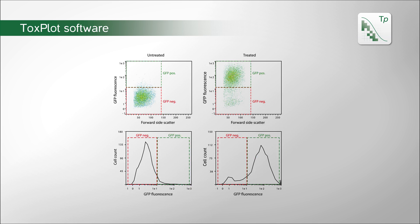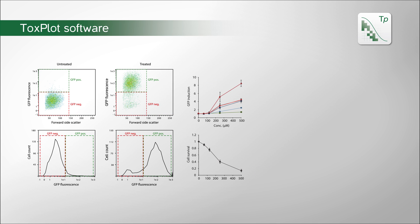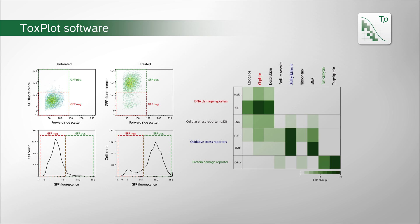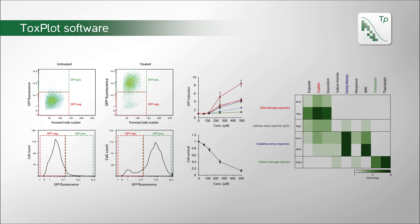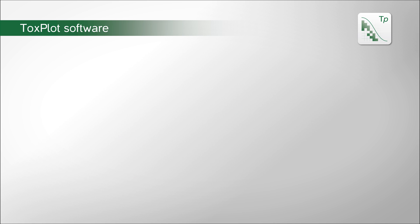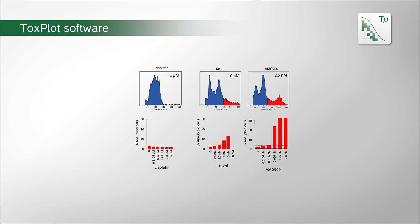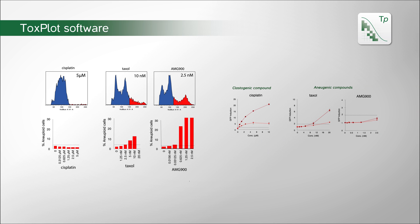With the help of our ToxPlot software, we can determine the differential activation of the Toxtracker reporters. This provides detailed insight into the mode of action of the compounds. The cell cycle and polyploidy information in Toxtracker ACE can be used to further discriminate between a clastogenic or aneugenic mechanism of genotoxicity.